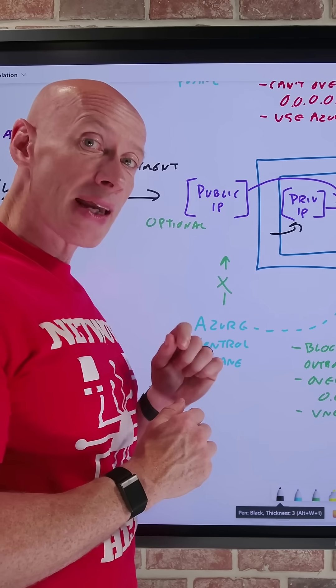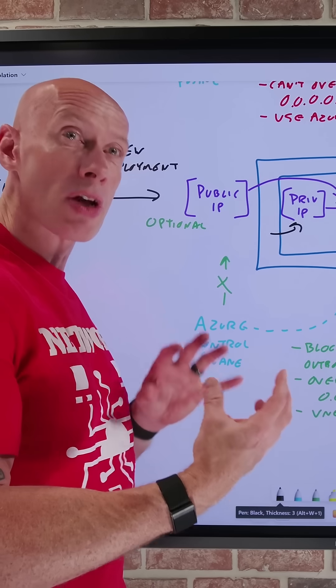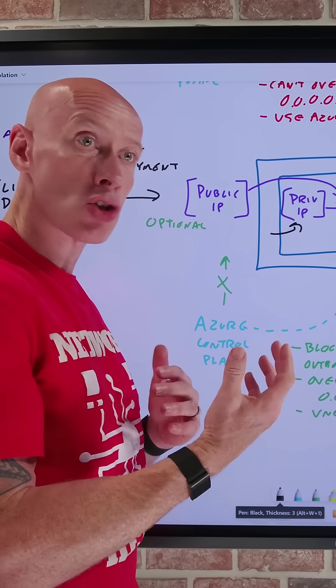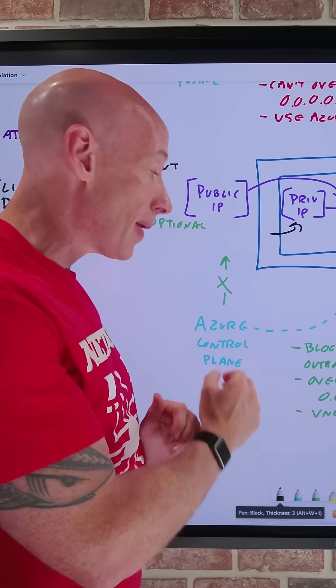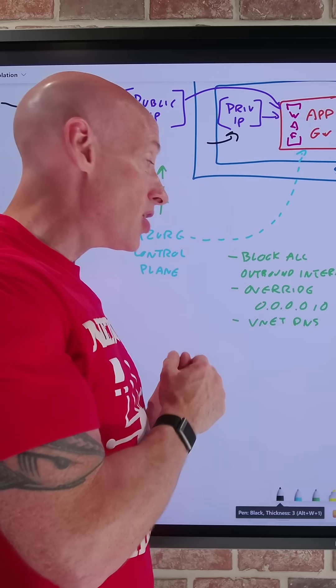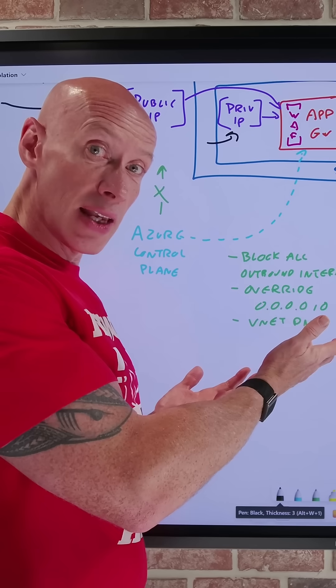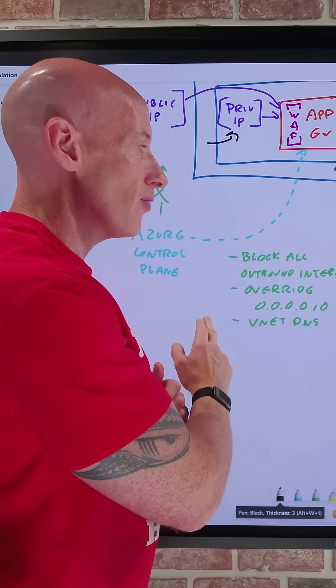In addition to making the public endpoint optional, it also removes a lot of the old restrictions we had around network control. I don't have to allow communication from the control plane if I do have a public endpoint. I can block all outbound internet communications. I can override the default internet route and it will use the virtual network's DNS configuration.